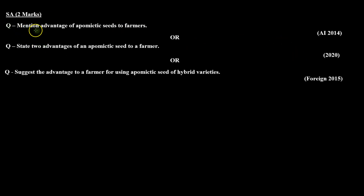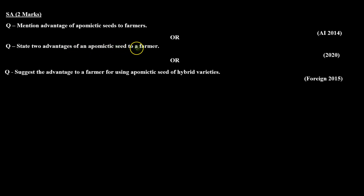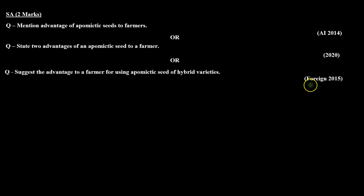The first type is: mention the advantage of apomyctic seeds to farmers, asked in All India examination in 2014. The second type is: state two advantages of an apomyctic seed to a farmer, asked in 2020. The last type is: suggest the advantage to a farmer for using apomyctic seed of hybrid varieties, asked in foreign examination in 2015.